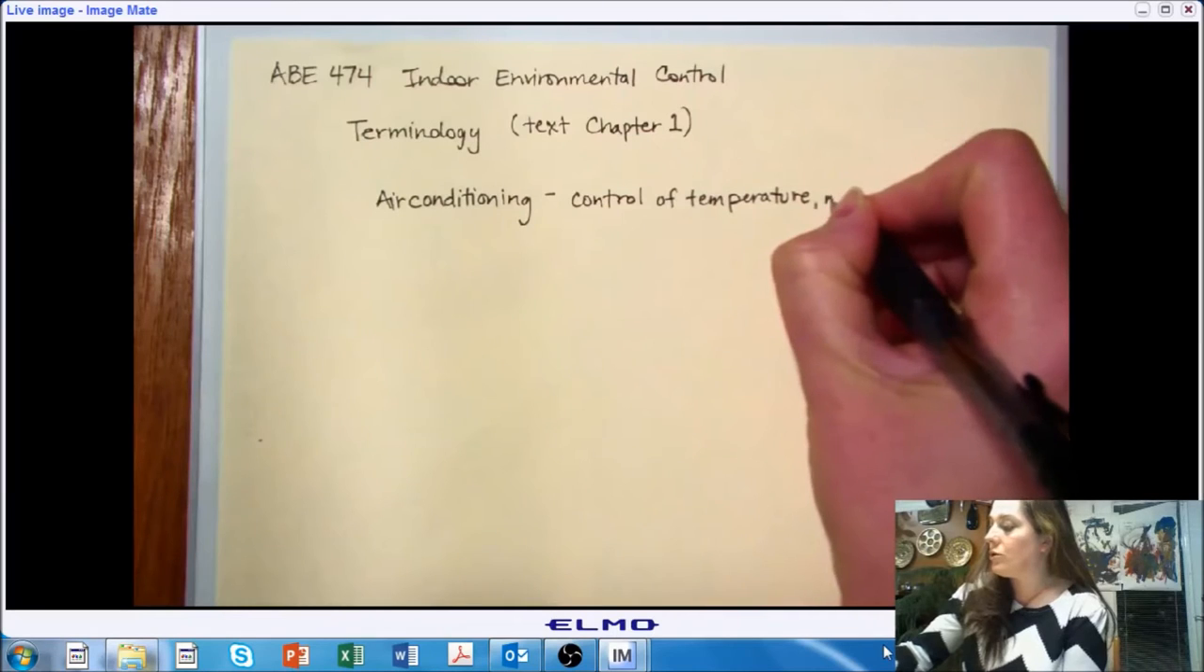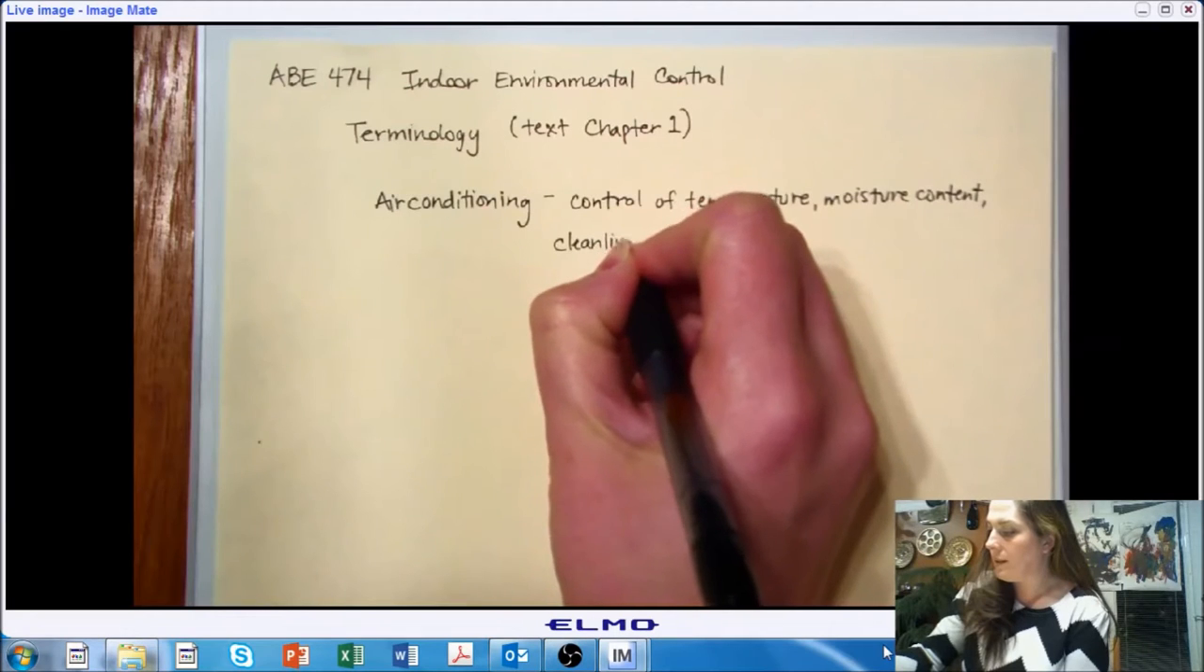We could be controlling moisture content. We could be looking at the cleanliness of the air, so wanting to control the cleanliness of the air. Other aspects of air quality, such as gases within the air. And we could also be looking at air movement or air circulation. So not necessarily the state of the air, but how the air is moved. It could also be a part of air conditioning.